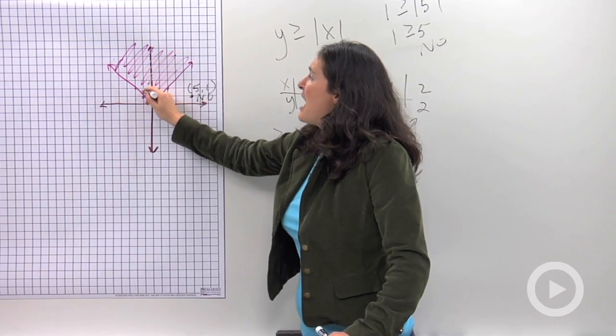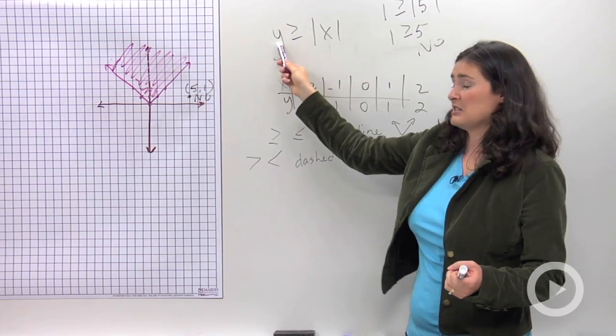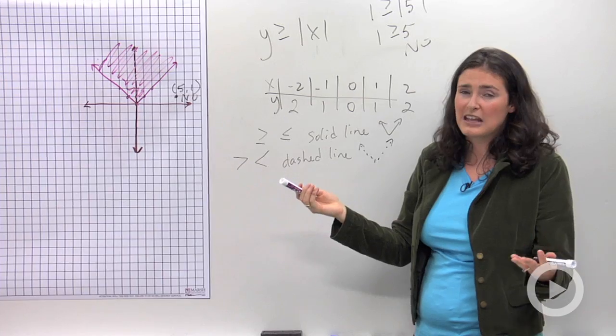What that means is that every single point inside of my v, if I were to plug in my x and y pairs to this inequality, I would get a true statement.